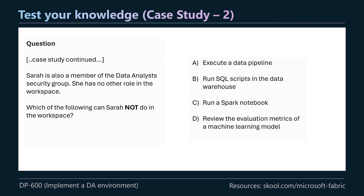Continuing the case study: Sarah is also a member of the Data Analysts group with no other role in the workspace. Which of the following can Sarah not do? A, execute a data pipeline; B, run SQL scripts in the data warehouse; C, run a Spark notebook; or D, review evaluation metrics of a machine learning model? The answer is C. A viewer can execute a data pipeline, run T-SQL in the data warehouse or SQL endpoint, and review ML model outputs — but a viewer cannot run a Spark notebook or execute any code in a notebook.